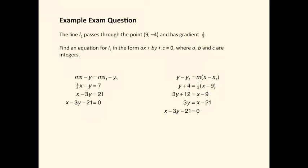Using the mx minus y form we get 1/3 x minus y equals 1/3 times 9 minus (-4), which equals 7. On multiplying by 3 to clear this fraction, x minus 3y equals 21. Bring the 21 over and we've got the answer.